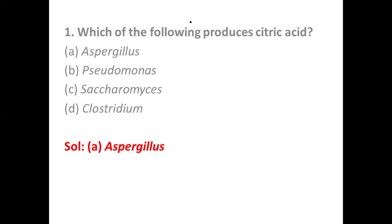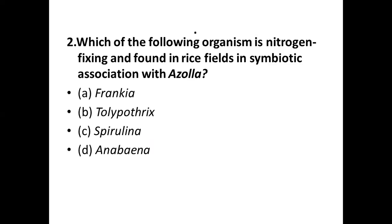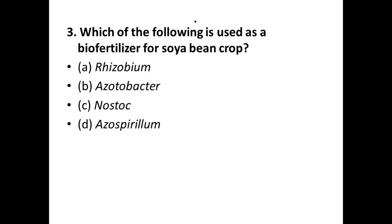TCA is also known as tricarboxylic acid. Question number two: which organism is nitrogen-fixing and found in rice fields in symbiotic association with Azolla? Options are: (a) Frankia, (b) Polypothrids, (c) Spirulina, and (d) Anabaena. The correct answer is option (d) Anabaena. Azolla floats on the surface of water by means of numerous small closely overlapping scale-like leaves, with roots hanging in water.